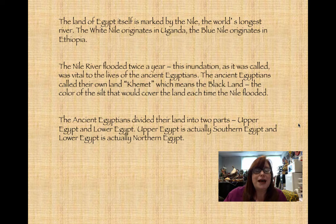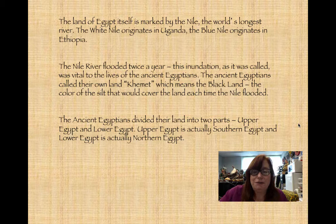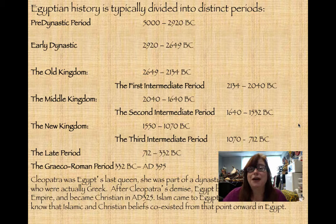Upper Egypt is actually Desheret — the southern part of the country where there is more desert. Lower Egypt is Northern Egypt, that is Kemet, where the Nile spreads out into a delta into the Mediterranean. And another thing you will notice about Egyptian history is that it's divided into distinct periods.